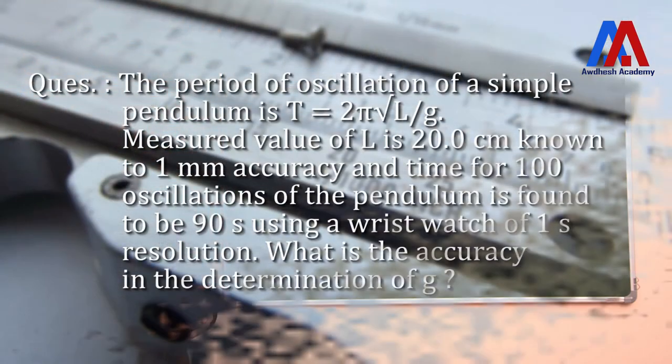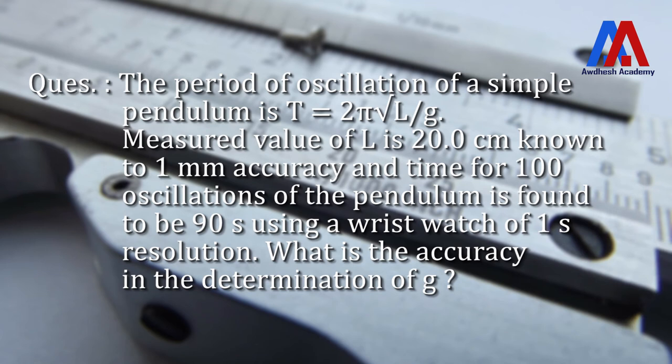The problem is as follows. There is a simple pendulum whose period of oscillation is T equal to 2π under root L upon G. The measured value of L is 20 cm and its accuracy is 1 mm. The time for 100 oscillations is measured as 90 seconds using a wrist watch whose least count is 1 second. The question is: what is the maximum possible error in the measured value of G, the acceleration due to gravity?